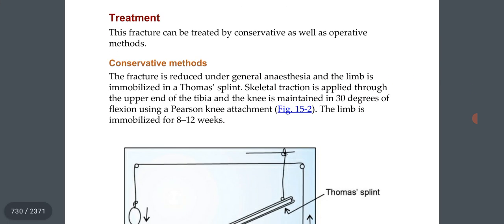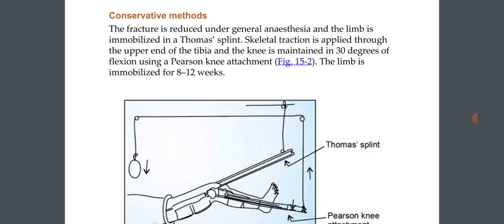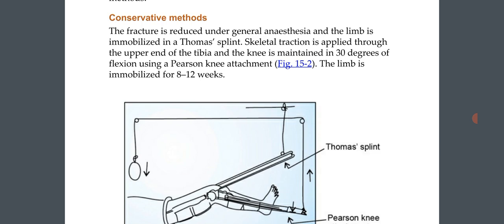This fracture can be treated by conservative as well as operative methods. Conservative method: the fracture is reduced under general anesthesia and the limb is immobilized in a Thomas splint. Skeletal traction is applied through the upper end of the tibia and the knee is maintained in 30 degrees of flexion using a Pearson knee attachment. The limb is immobilized for 8 to 12 weeks.